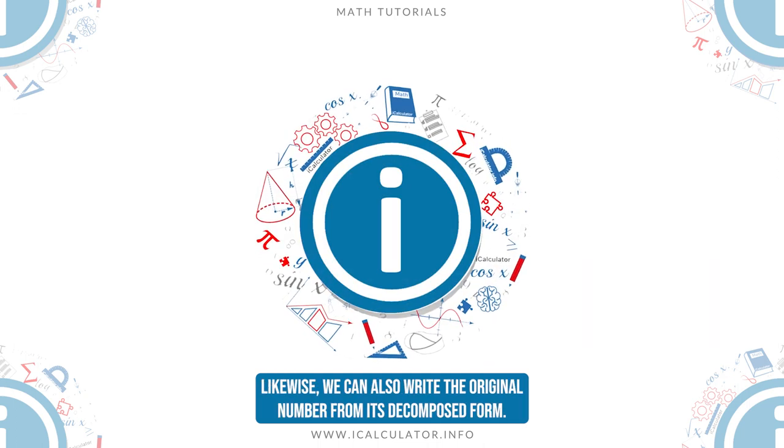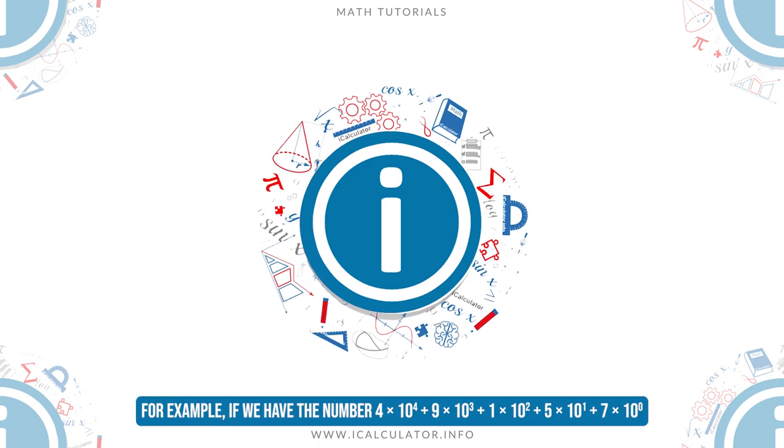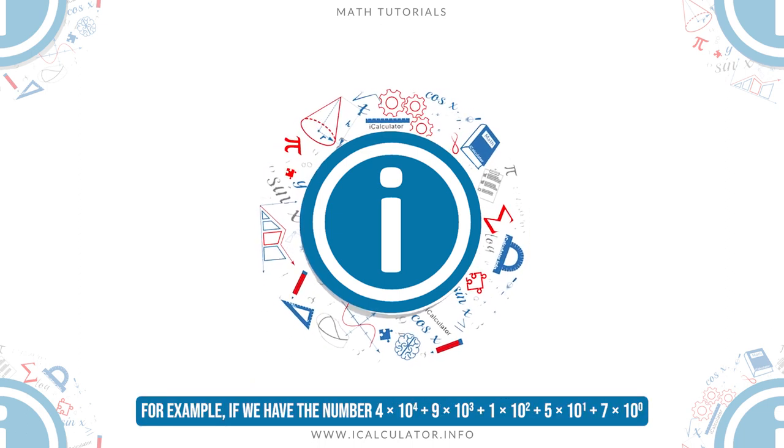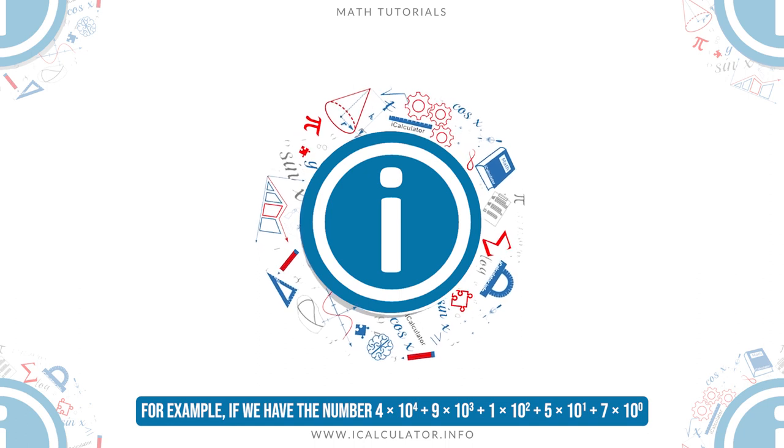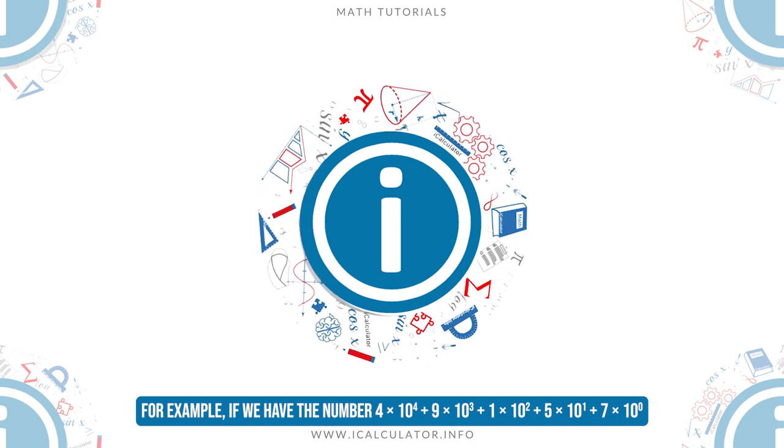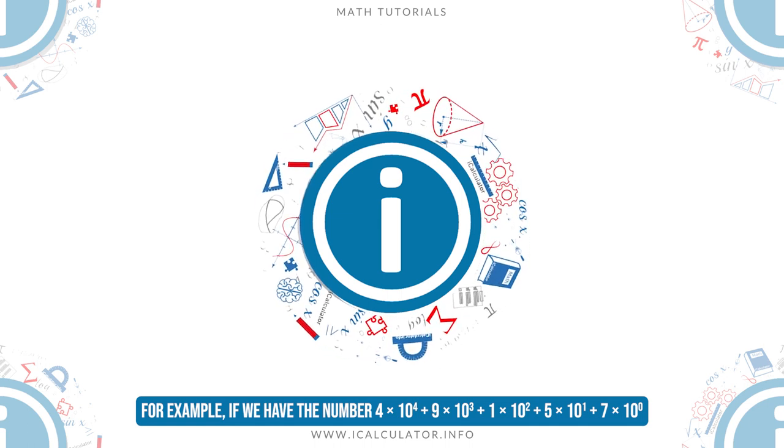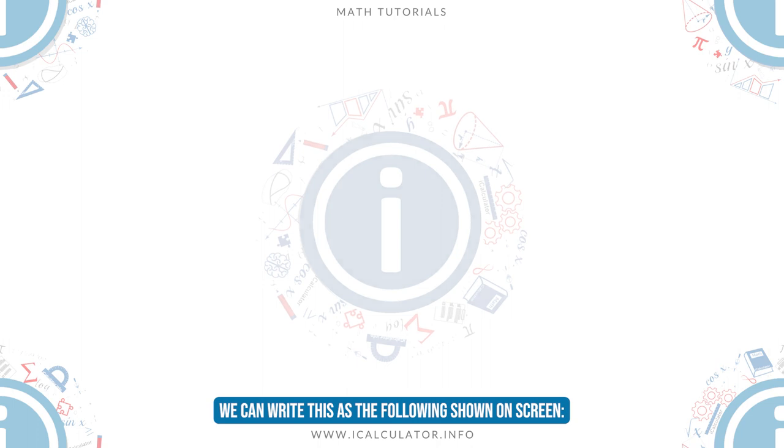Likewise, we can also write the original number from its decomposed form. For example, if we have the number 4 times 10 to the power of 4 plus 9 times 10 to the power of 3 plus 1 times 10 to the power of 2 plus 5 times 10 to the power of 1 plus 7 times 10 to the power of 0, we can write this as shown in the following on screen.